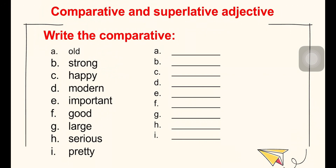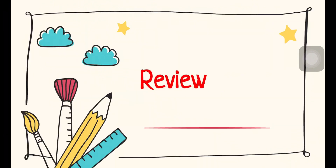With superlative adjectives, for adjectives with one syllable we add '-est'. For words ending in Y with two syllables, we change Y to I and add '-est'. For adjectives with three or more syllables, we add 'the most' before the adjective.